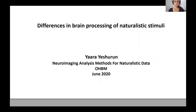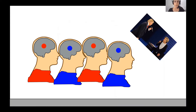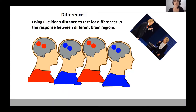Hi, my name is Yaira Shun, and as part of the New Energy Analysis Methods for Naturalistic Data Educational course, I'll present today an application of using Euclidean distance to test for differences in the response of different brain networks. I use inter-subject correlation to test for regions involved in processing of naturalistic stimuli. In the project I'll present today, I was interested in the differences in the brain response between different people, and specifically in quantifying the difference in the brain response between different brain networks. To quantify this, I used Euclidean distance between the mean response of participants. We developed this method during my postdoc in Princeton, working with Uri Hassan.